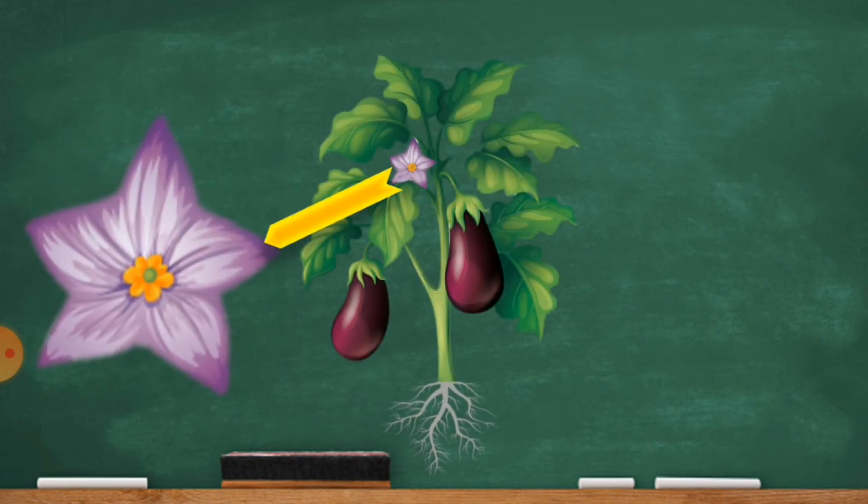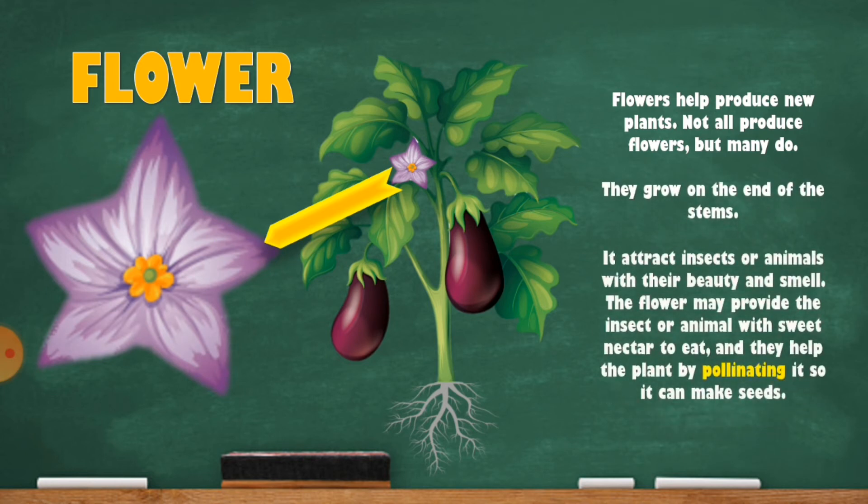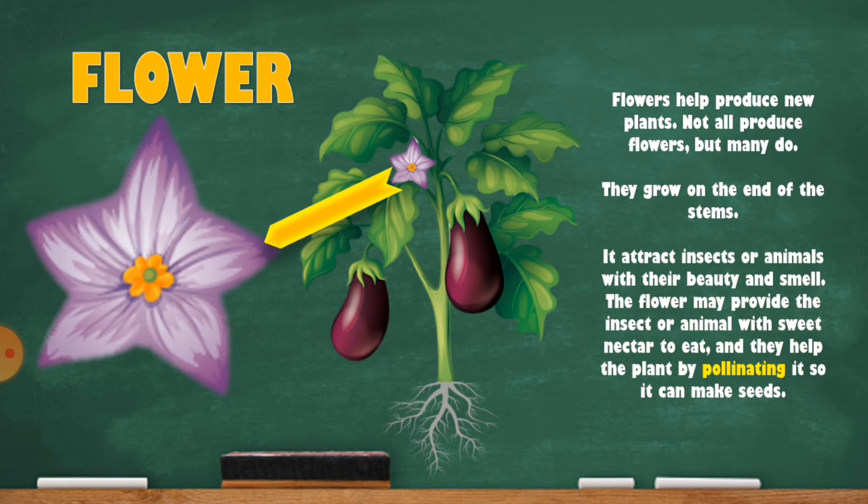Now we will talk about the flower. Flowers help produce new plants. Not all produce flowers, but many do. They grow on the end of the stems. It attracts insects or animals with their beauty and smell. The flower may provide the insect or animal with sweet nectar to eat, and they help the plant by pollinating it so it can make seeds.